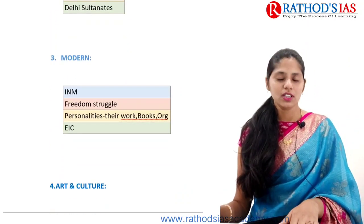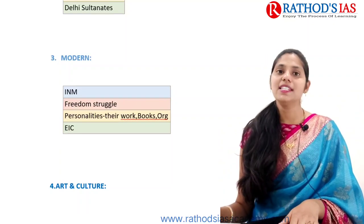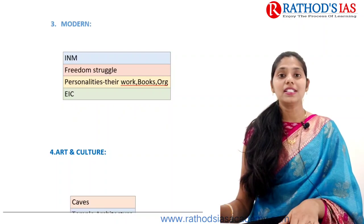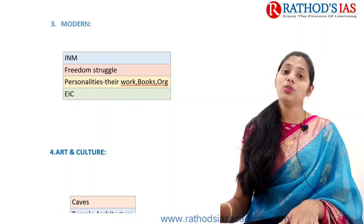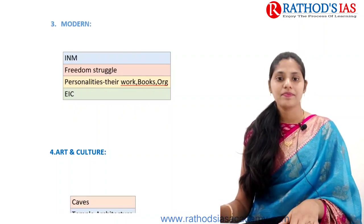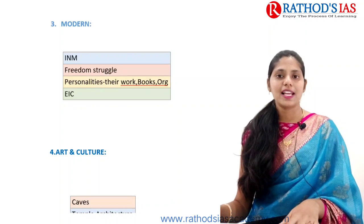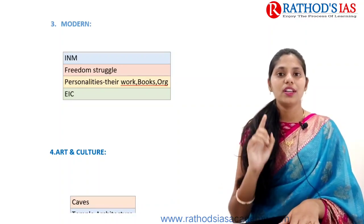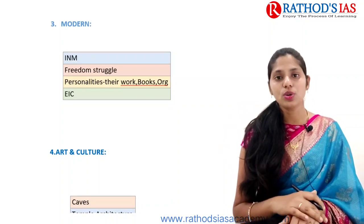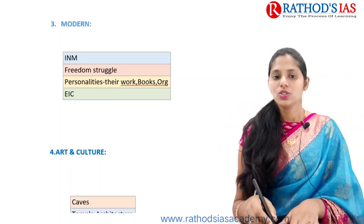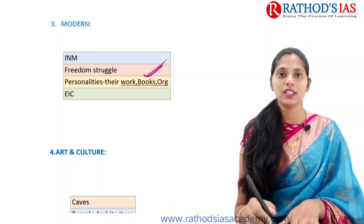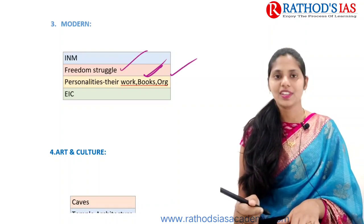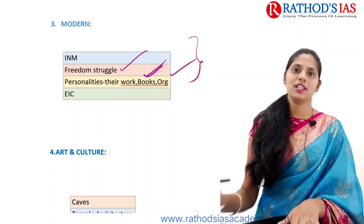In Modern History you need to focus more on the Indian National Movement and Indian Freedom Struggle, and also personalities. You have to focus on the East India Company. From personalities, you can get a question every year — for example, who is the author of a certain book. So you need to focus on books, newspapers, work done, and organizations.